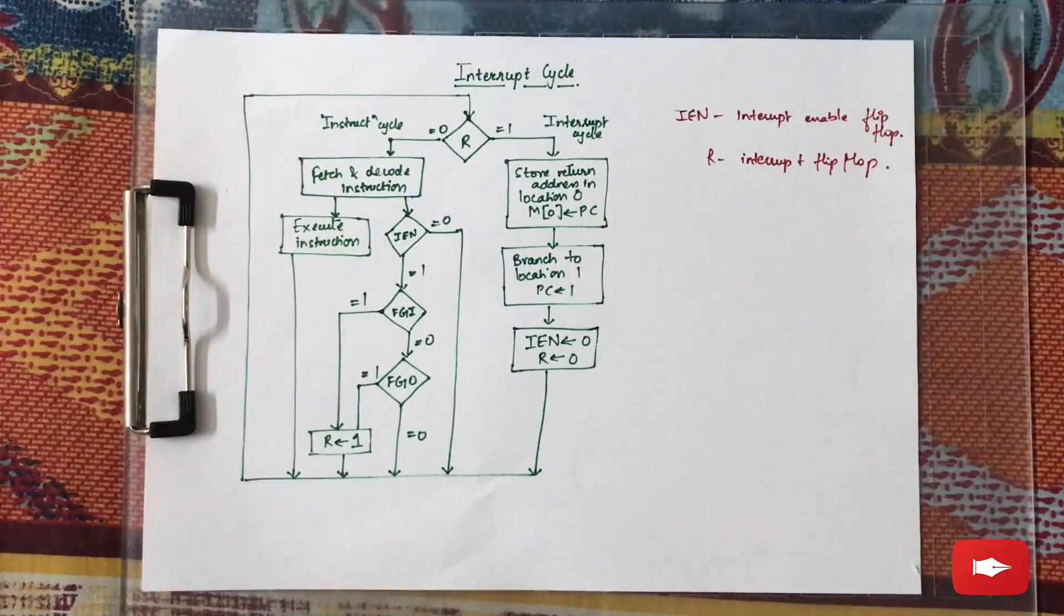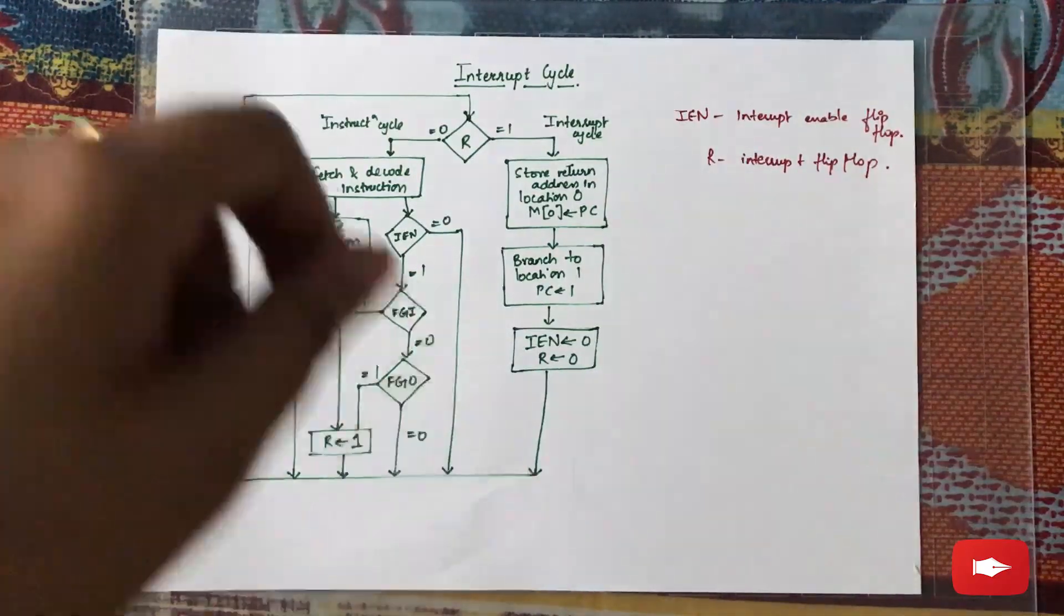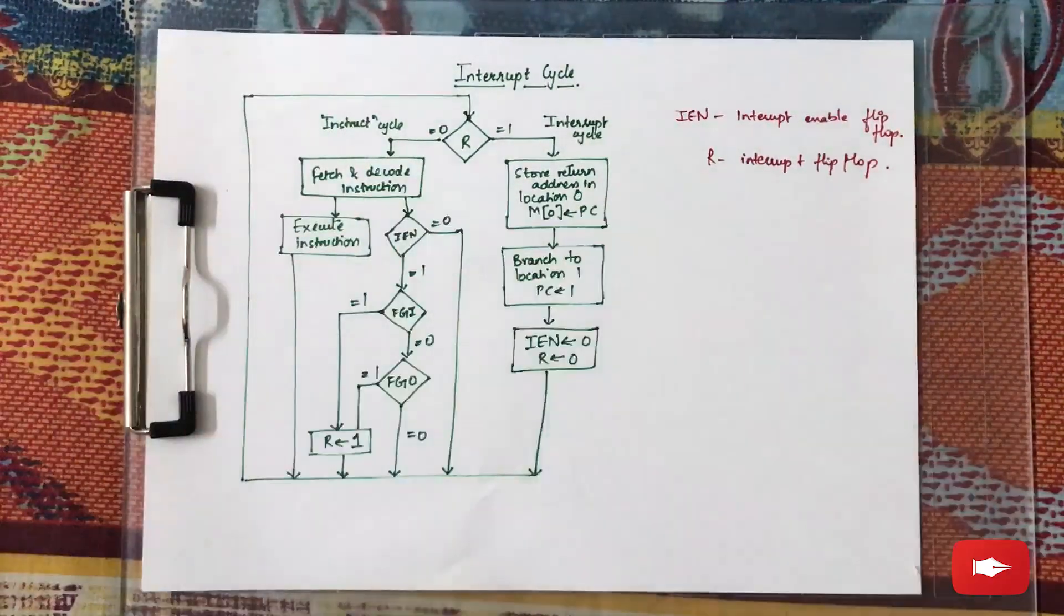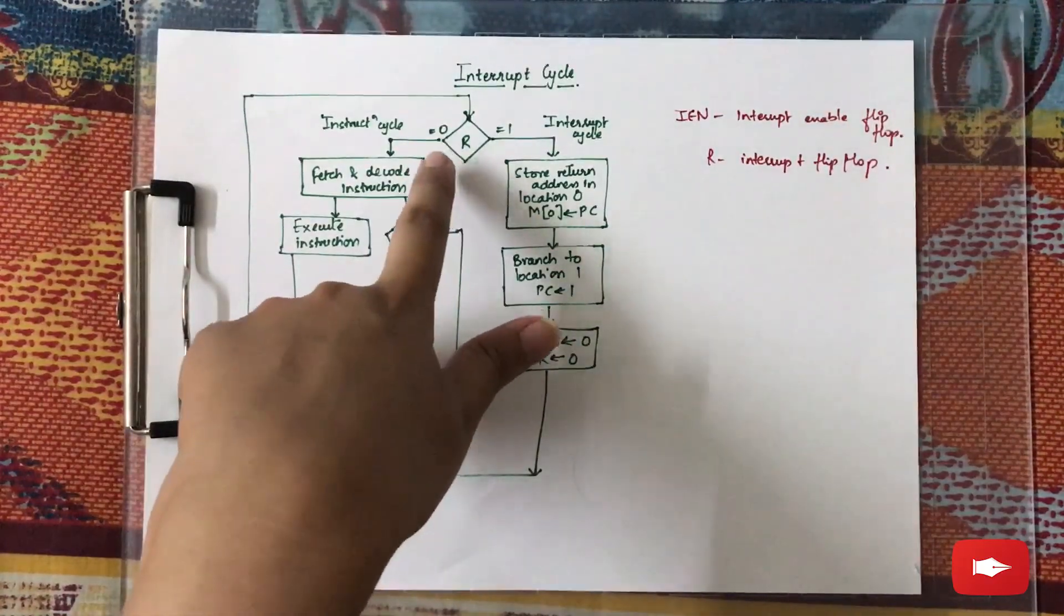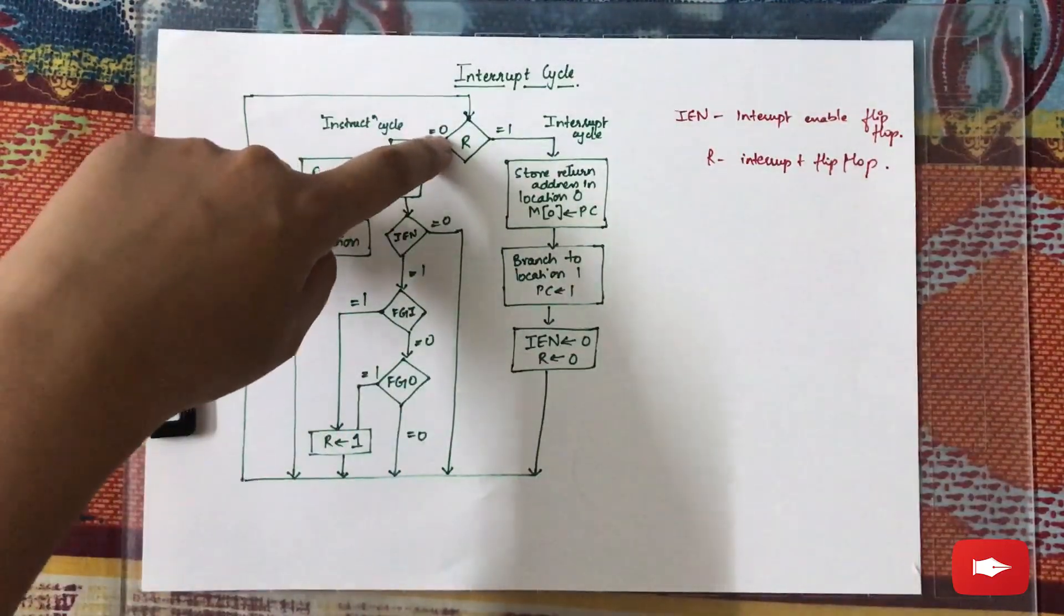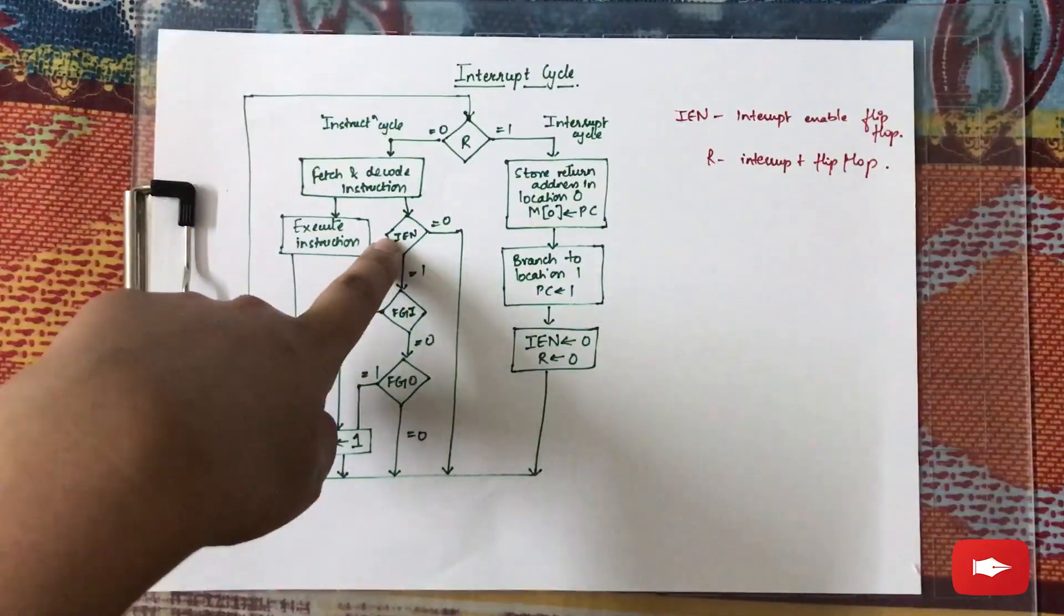The topic for this video is interrupt cycle - that is, during an instruction cycle, how an interrupt is handled. Firstly, there are two flip-flops here: one is the R flip-flop, the other is the IEN.